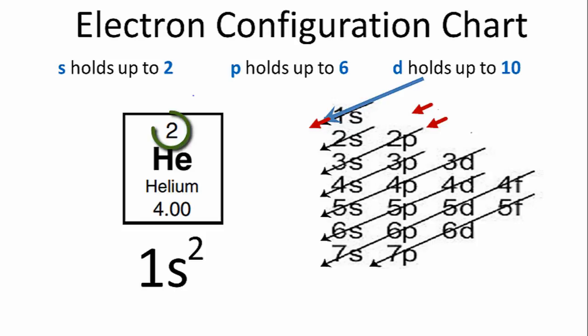Now we've used all the electrons we have for helium, so we're actually done with this electron configuration. If we were going to go on and do other elements like lithium or boron, we would continue down these rows.